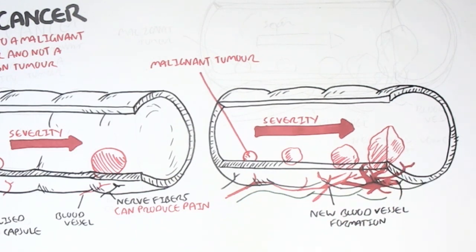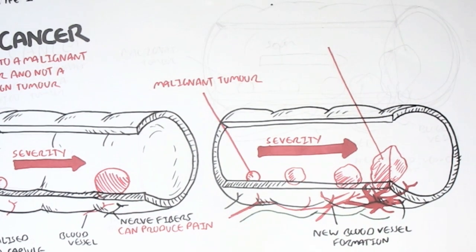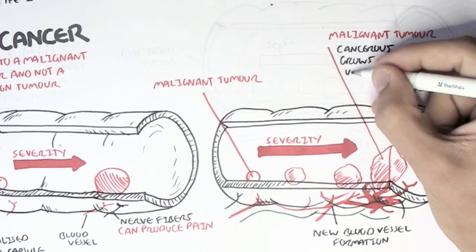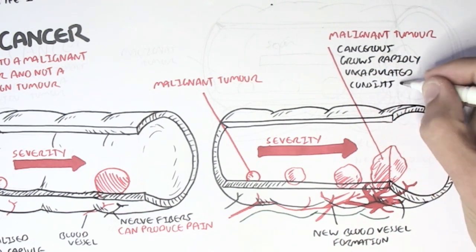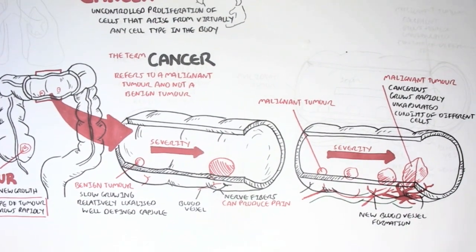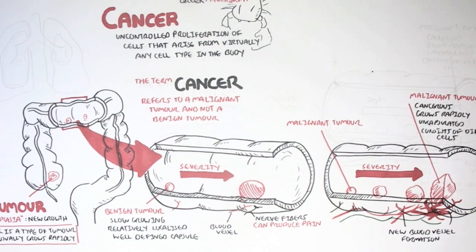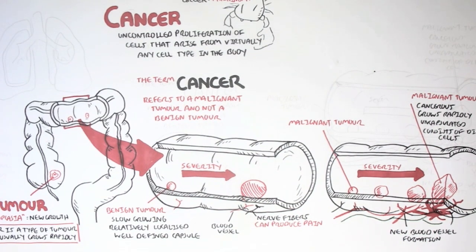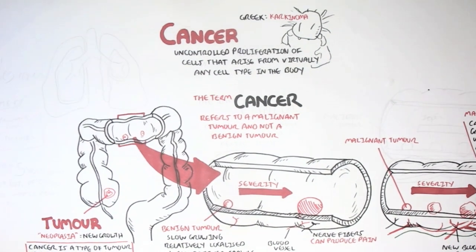The malignant tumor is characterized by: it's cancerous, it grows rapidly, it's uncapsulated, and it consists of different types of cells because of various mutations that occur. Malignant tumors can also break off and travel to other areas or other organs in the body and cause tumors there, so it's very dangerous. So benign — not so dangerous; malignant — very dangerous.